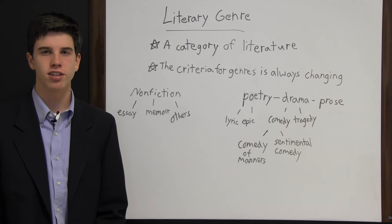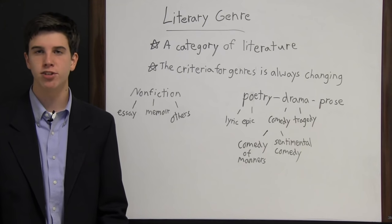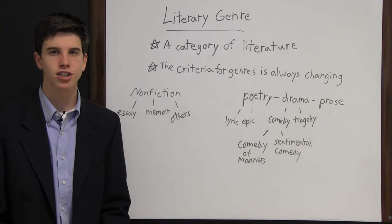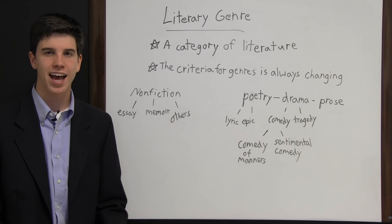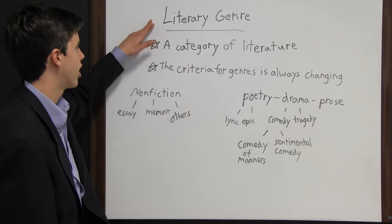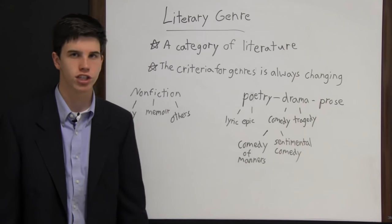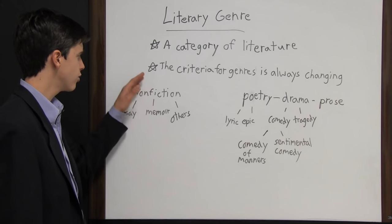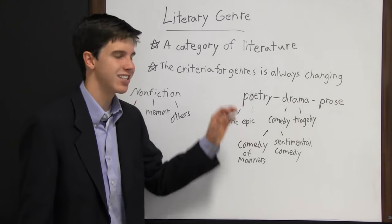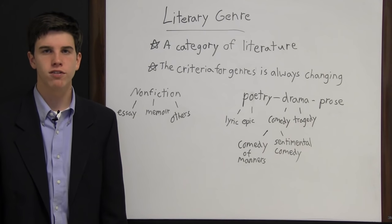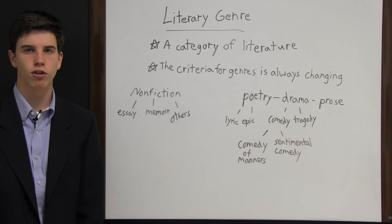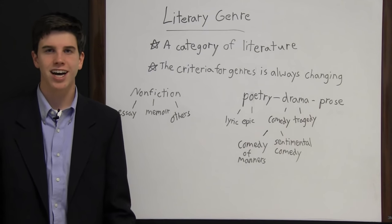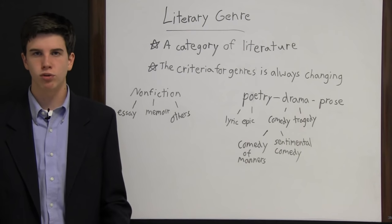A literary genre is basically a category of literature — similar to how musical genres like rock, classical, pop, and country are categories of music. It's when you take similar works of literature and group them together. It's important to remember that the criteria for genres is always changing — literary experts have differing views on which genres should exist, so it's not cut and dry.